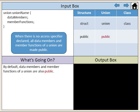By default, data members and member functions of a union are also public. When there is no access specifier declared, all data members and member functions of a union are made public.